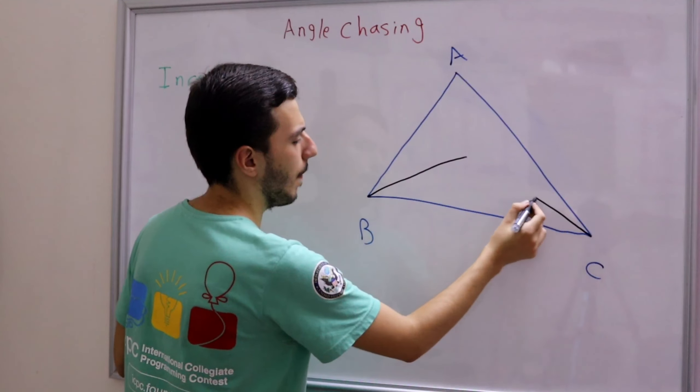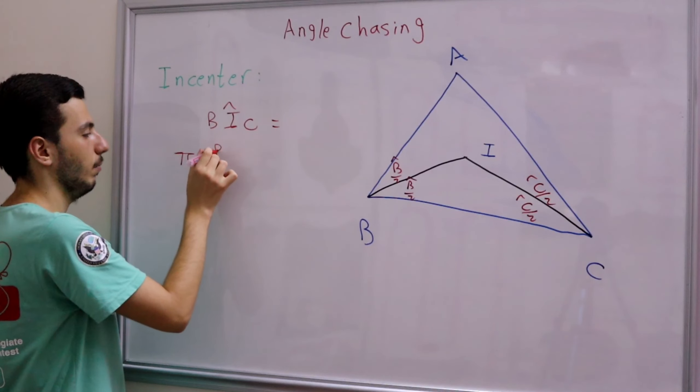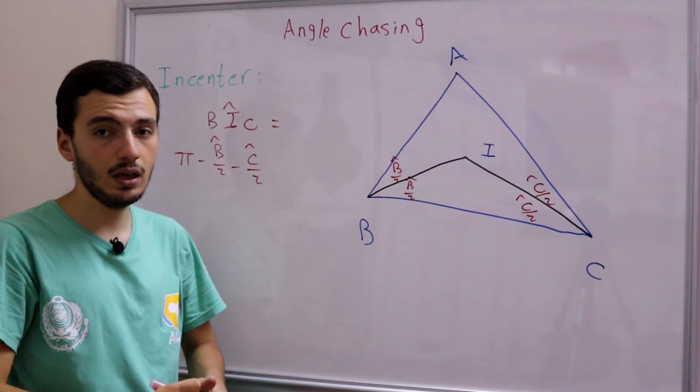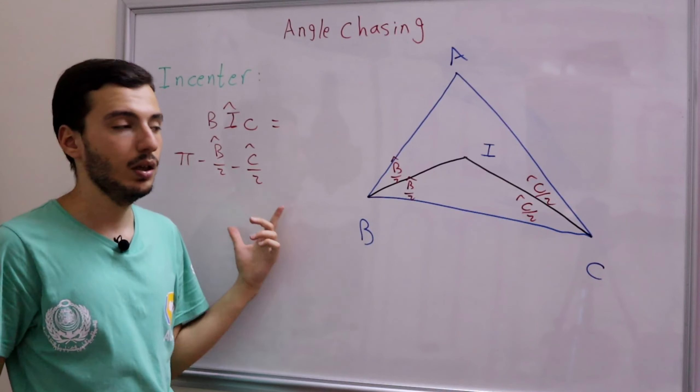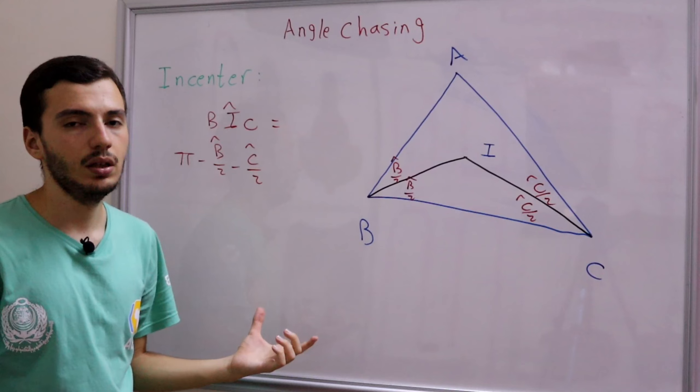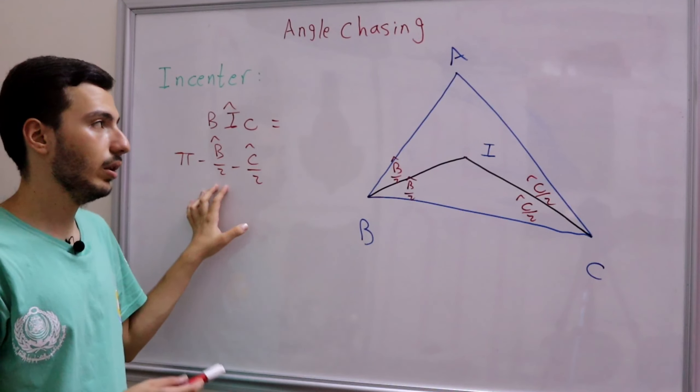Now we want to find angle BIC, which is simple — in triangle BIC we know two angles, so we can find the third. Angle BIC equals π minus B/2 minus C/2. We've found angle BIC using angles B and C, but we can still write it in a cleaner way.